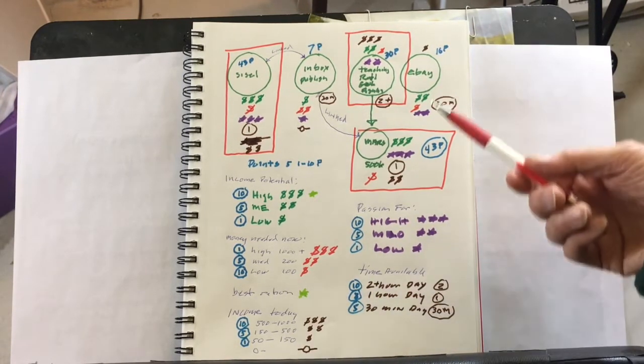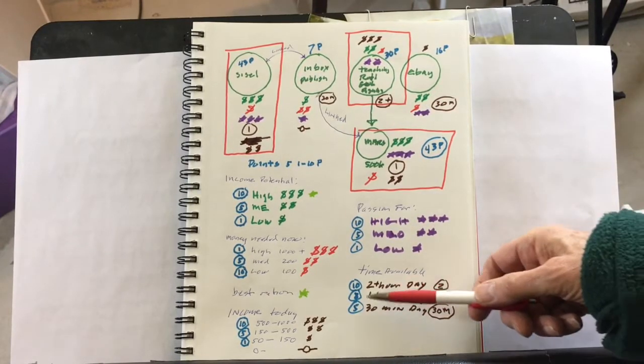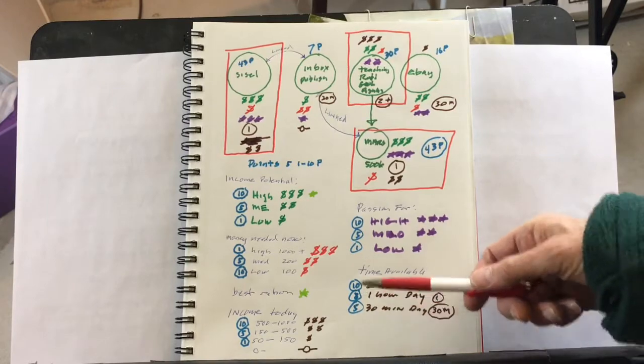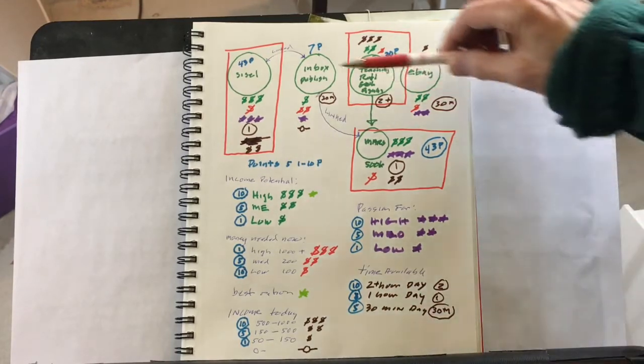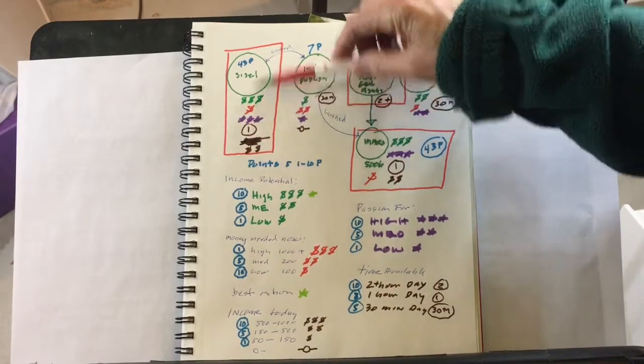And for time, is the availability two hours? Then you get 10 points. If you've got an hour, you get 8 points. If you've got 30 minutes a day, you get 5 points. Now, I went back to the key, these codes, and added up the points.